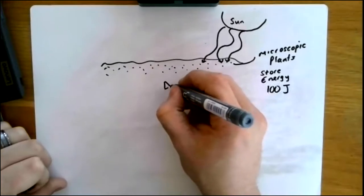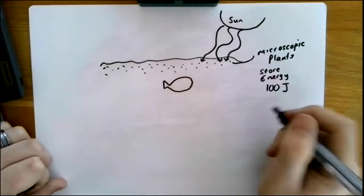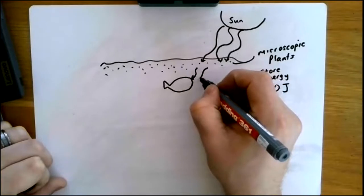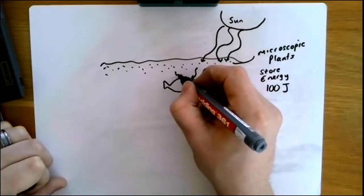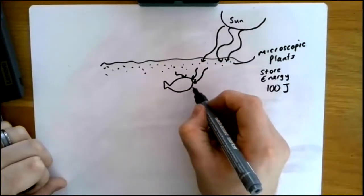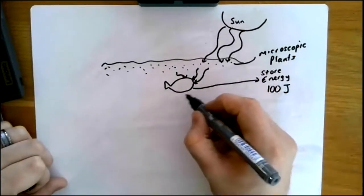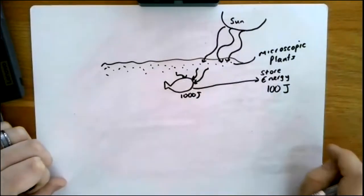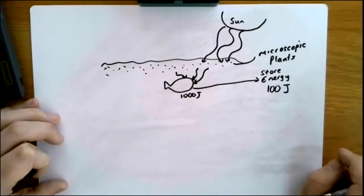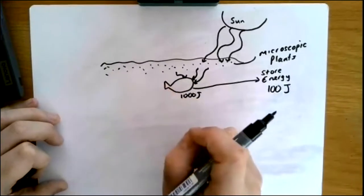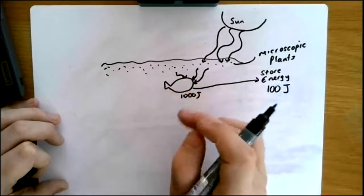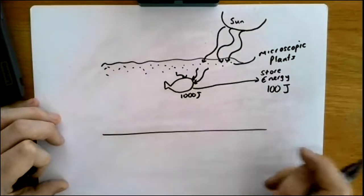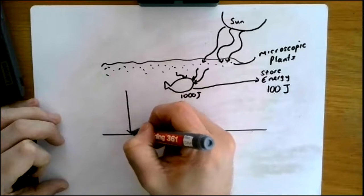Other things can eat that algae — fish, whales, and other marine wildlife — and they obviously eat a lot more than one, so they eat many algae. These animals would store even more energy because they're eating lots of algae, so a fish could store maybe a thousand joules. Ancient versions of these organisms lived and died, so ancient marine plants and animals would have lived and died, and when they die they fall to the sea bed, which is just the bottom of the ocean.